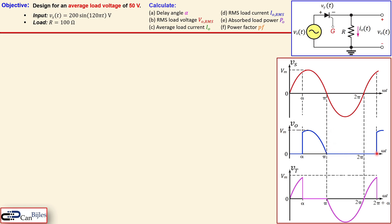The pattern repeats after 2π plus alpha. The thyristor voltage Vt is only active before alpha, and it also follows the waveform during the negative cycle of the input. If you take the blue and pink waveforms on top of each other, you get the red curve which is our input. We will see how that affects our circuit analysis and the output voltage.